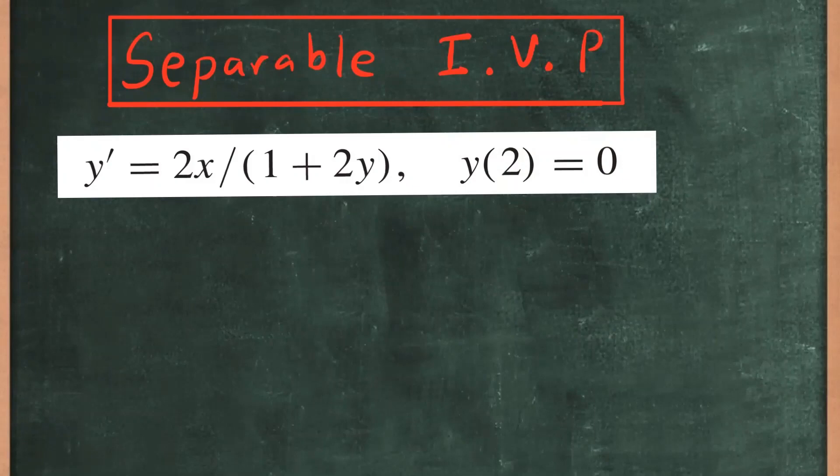So we're going to represent y prime in this notation. We're going to write that as dy/dx is equal to 2x over 1 plus 2y. Now I try to separate the variable, meaning I want terms involving y and terms involving x on two different sides. So it looks like I can multiply both sides by this, so I can have everything involving y to the left side.